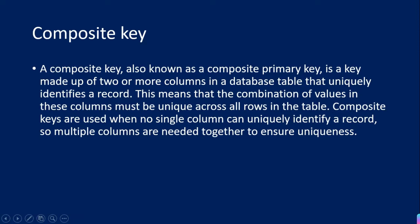A composite key, also known as a composite primary key, is a key made up of two or more columns in a database table that uniquely identify the record. A single field is used as a regular primary key, but here two fields are clubbed together to uniquely identify a record. The combination of values in these columns must be unique across all rows. Composite keys are used when no single column can uniquely identify the record — multiple columns are needed together to ensure uniqueness.